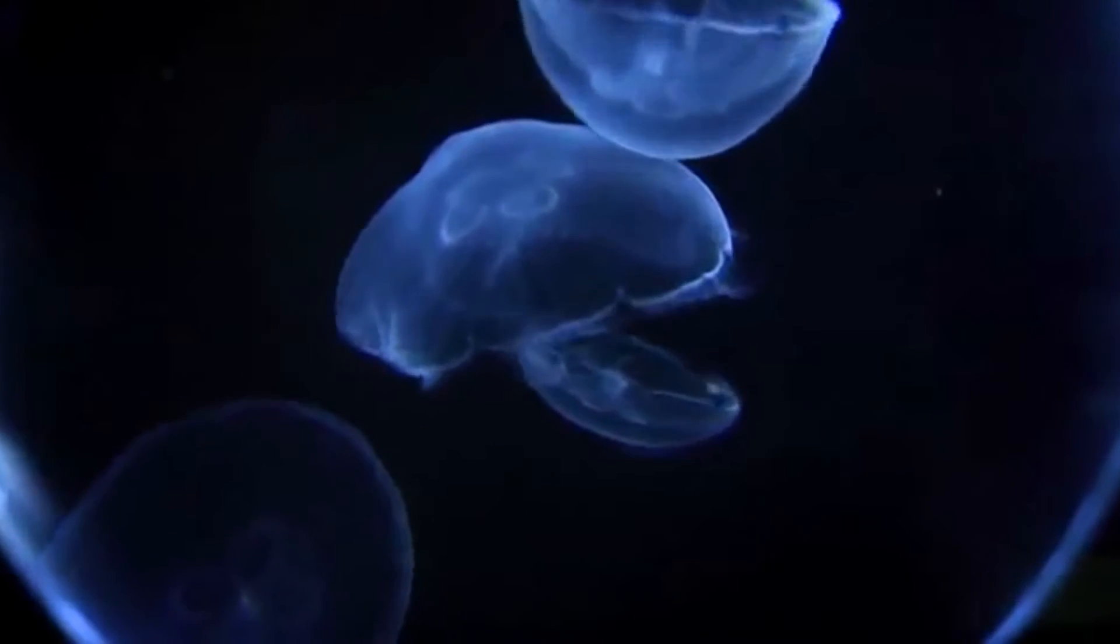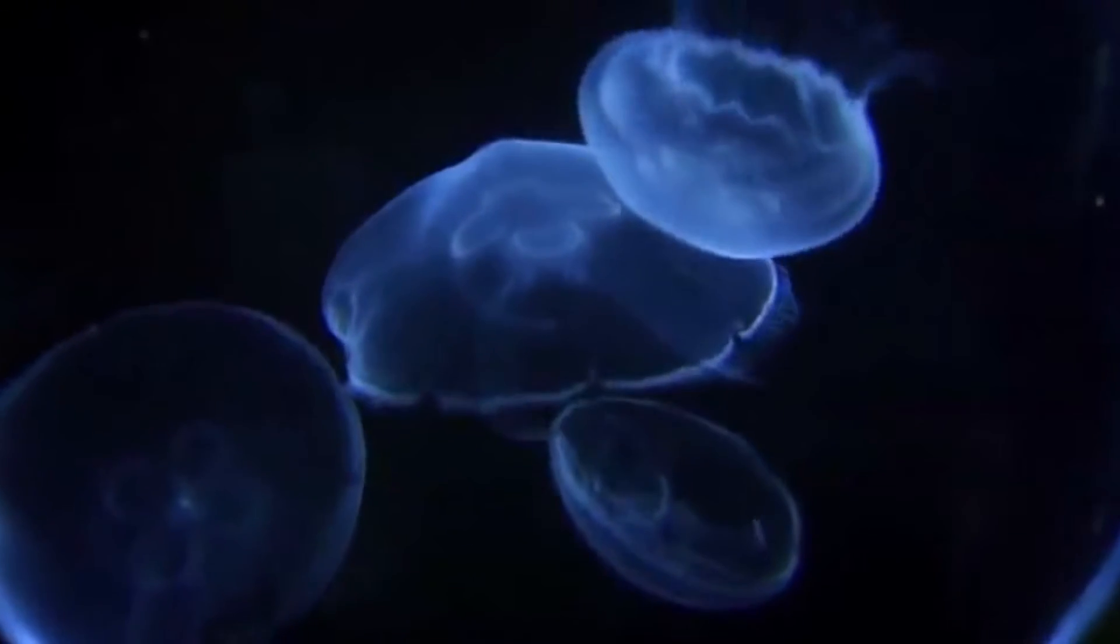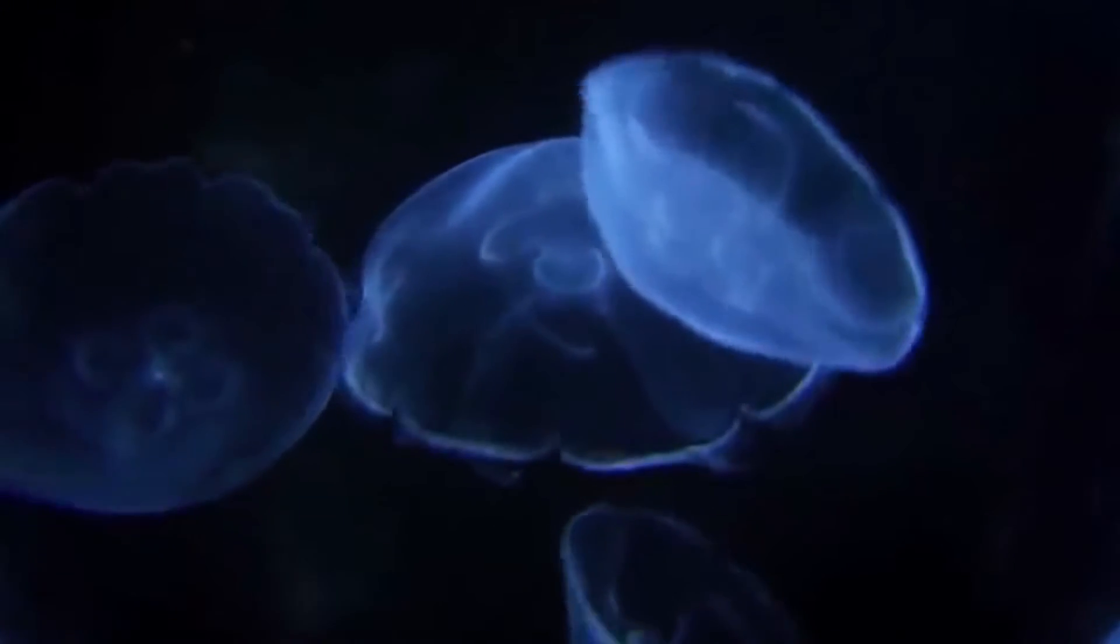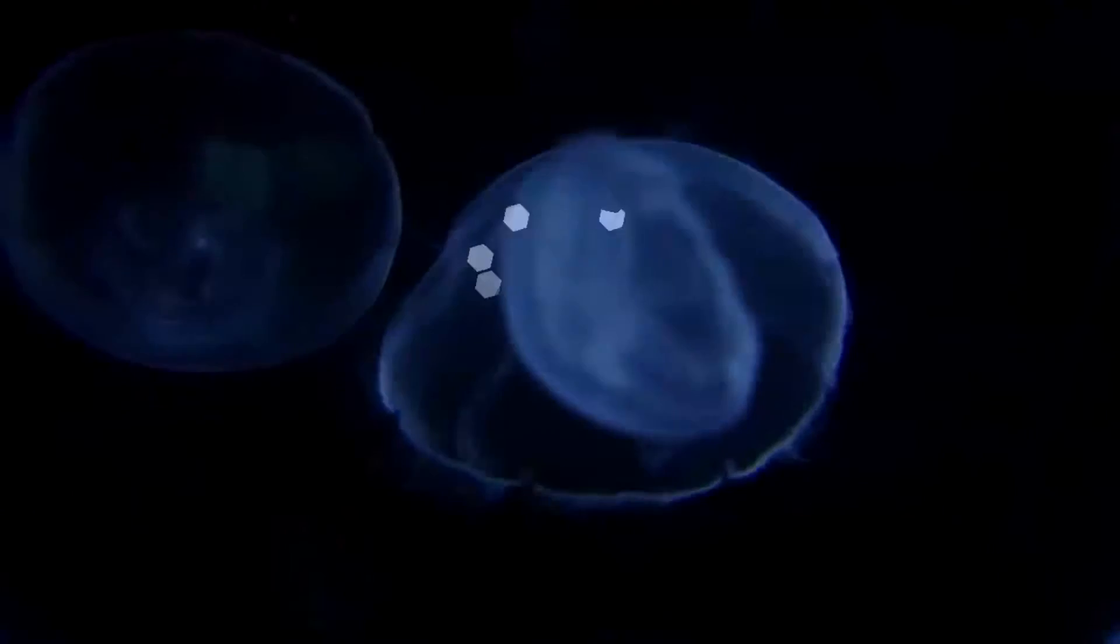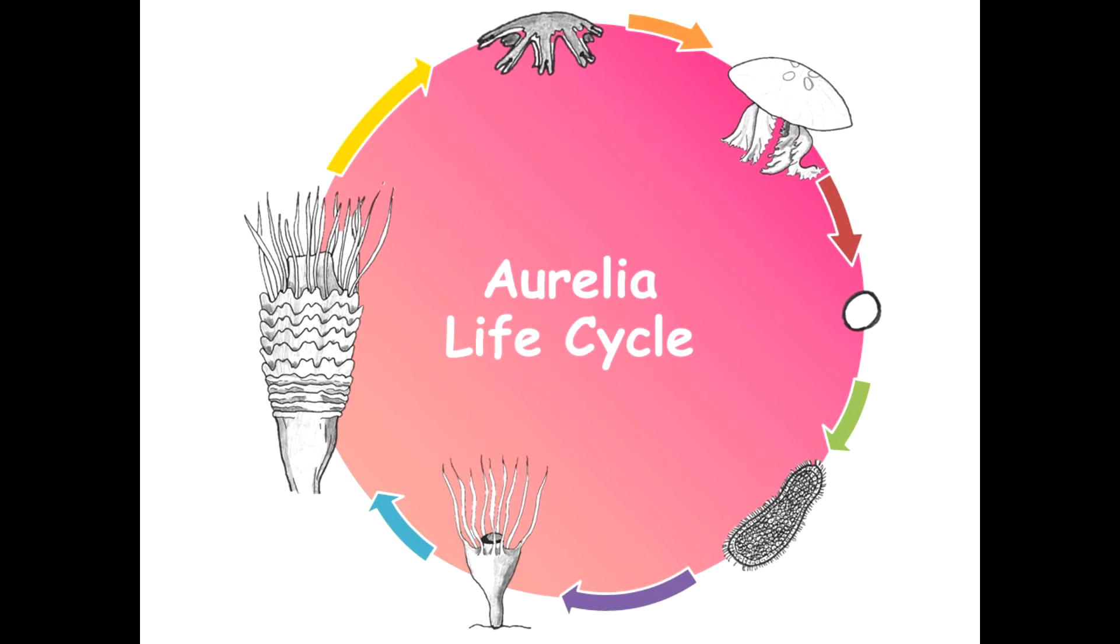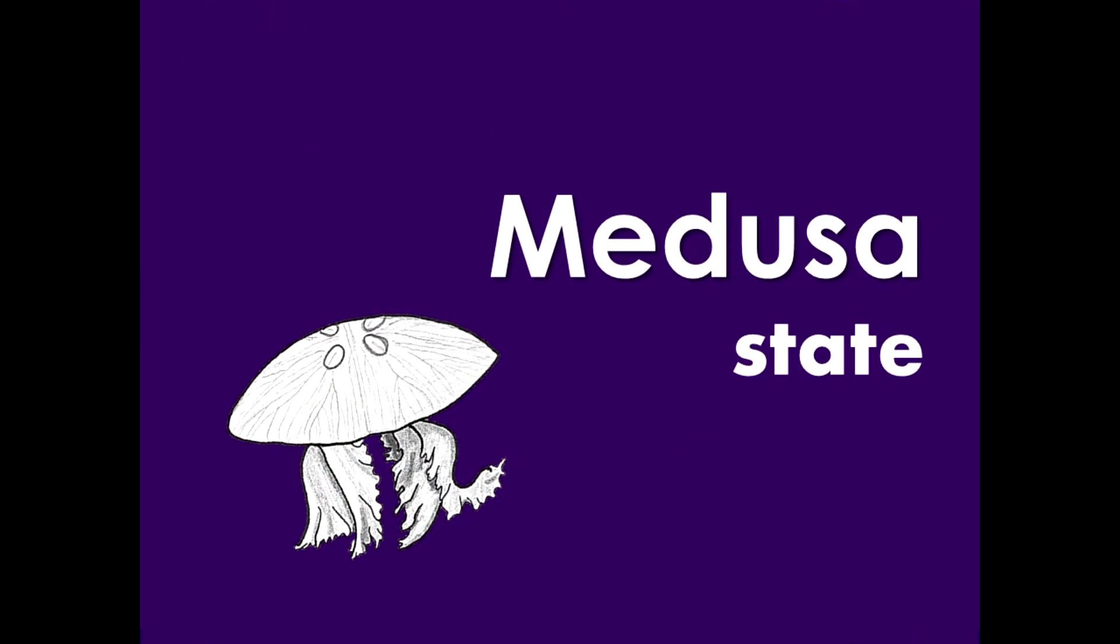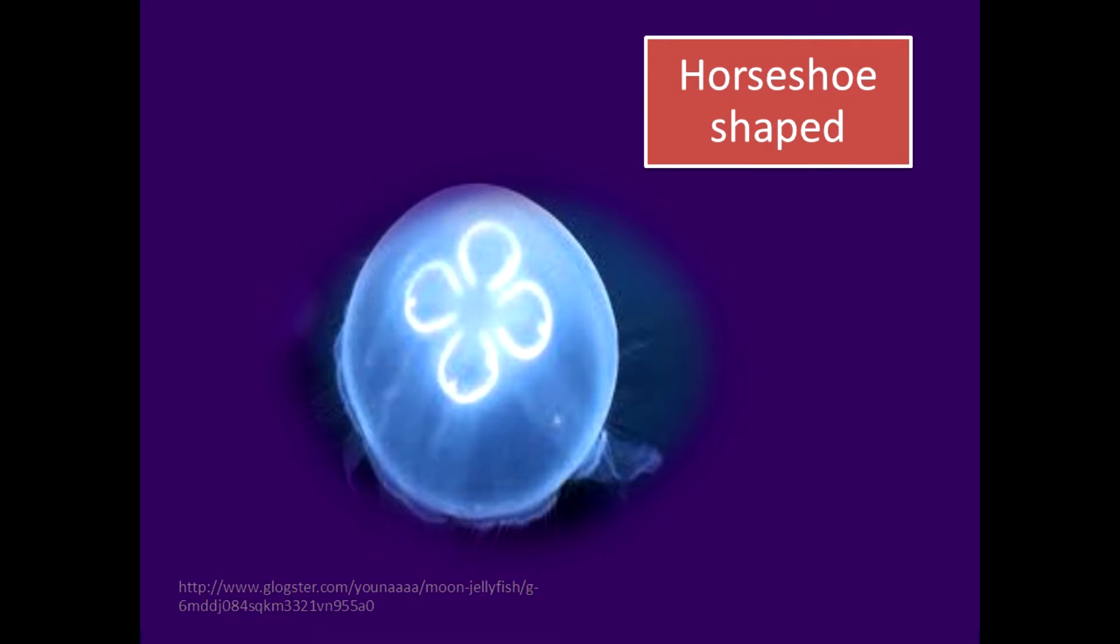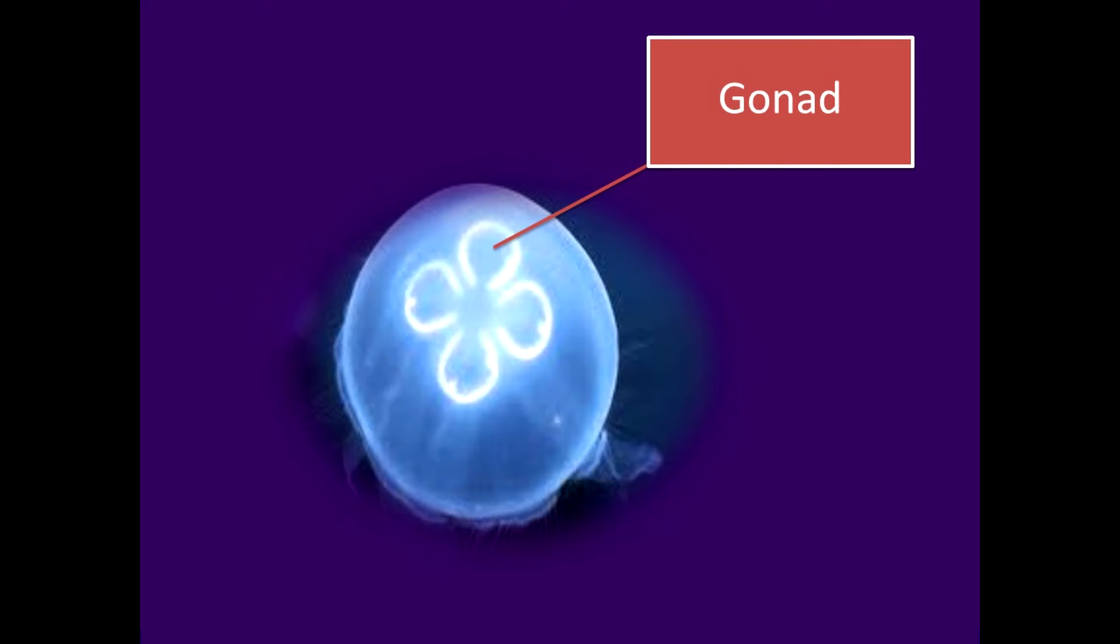Moon jellies are probably the most common and widely recognized type of jellyfish. You will notice that a distinguishing feature of the moon jelly is the set of four horseshoe-shaped structures on the aboral surface. These are the gonads.